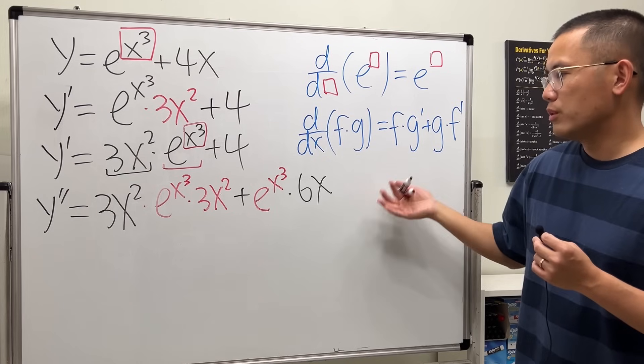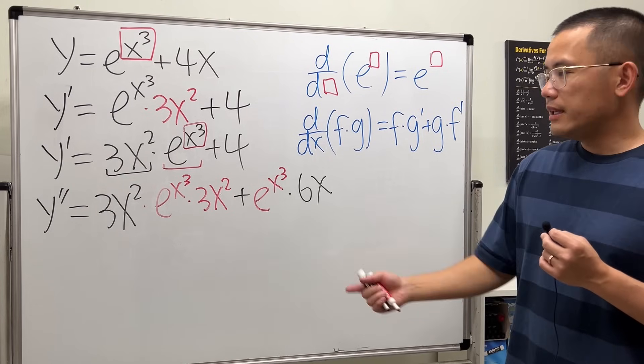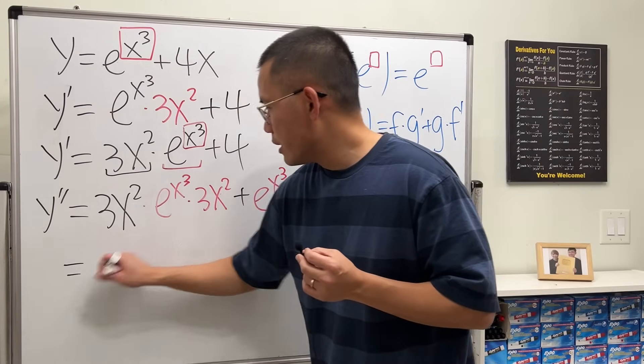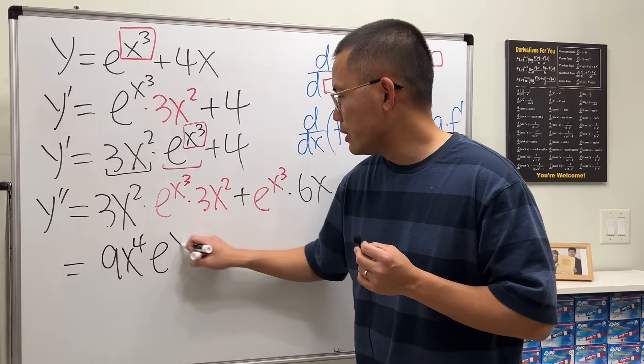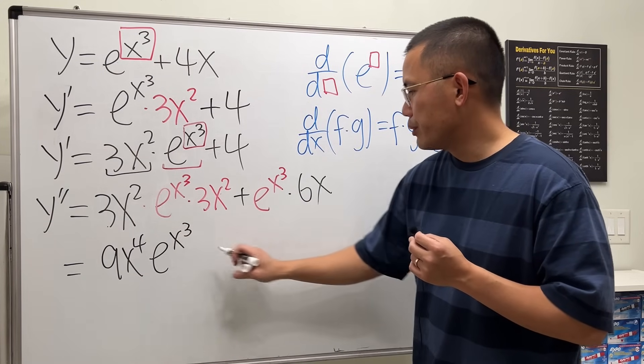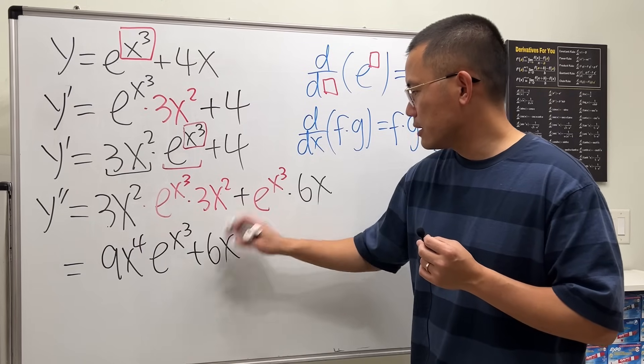so we get 9x⁴e^(x³) and then put the 6x to the front: 6xe^(x³). This will be okay. In some situations maybe you want to factor